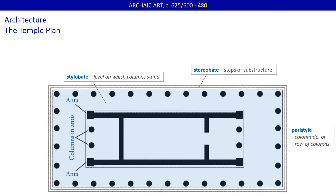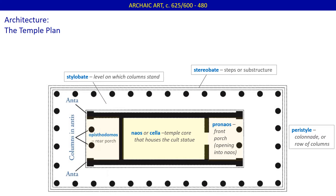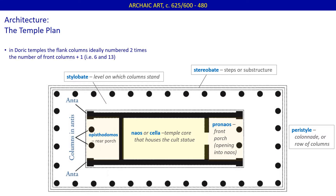This substructure is called the stereobate. The enclosed temple core is called the naos, or cella, and it would house the cult statue. The front porch is known as the pronaos, and the back porch is called the opistodomos. The overall plan of the temple is, of course, rectangular. In canonical Doric temples, the flank columns numbered two times the number of front columns plus one — so, six across the front and thirteen down the long sides.